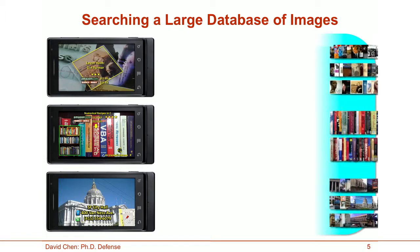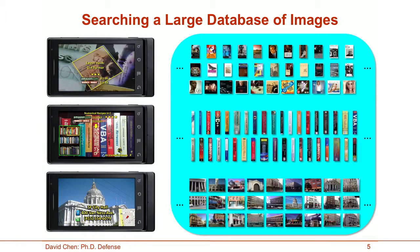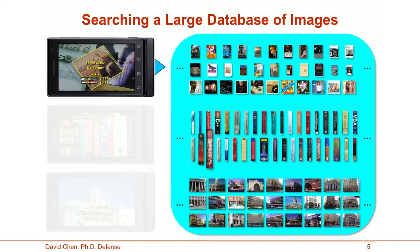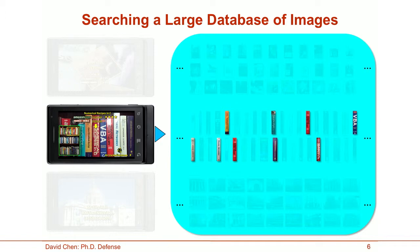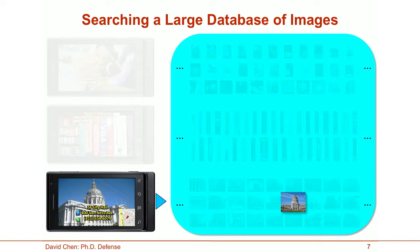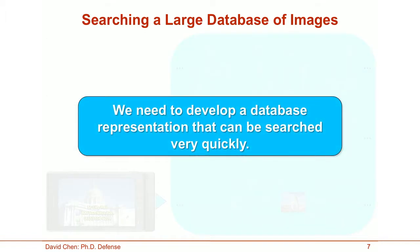For all three applications I have mentioned, there is a common need to search a large database of images. For media cover recognition, we need to compare the query image against all database images to recognize which database media cover best matches. Similarly, for book spine recognition, we need to identify all database book spines that match the spines currently visible in the viewfinder. And for landmark recognition, we need to find the landmark database image that best matches the query, even though these two images might be taken from different vantage points and at different times. So here we've identified the first major requirement: we need a database representation that can be searched very quickly across maybe one million images or more.